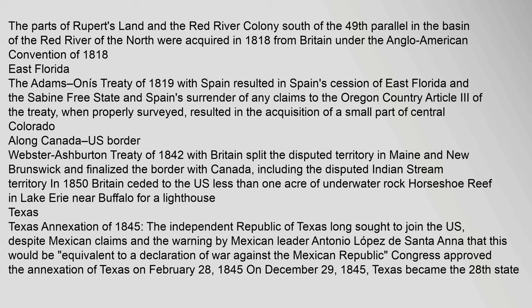East Florida: The Adams-Onís Treaty of 1819 with Spain resulted in Spain's cession of East Florida and the Sabine Free State, and Spain's surrender of any claims to the Oregon Country. Article III of the treaty resulted in the acquisition of a small part of central Colorado. The Webster-Ashburton Treaty of 1842 with Britain split the disputed territory in Maine and New Brunswick and finalized the border with Canada, including the disputed Indian Stream territory. In 1850, Britain ceded to the U.S. less than one acre of underwater rock — Horseshoe Reef in Lake Erie near Buffalo — for a lighthouse.